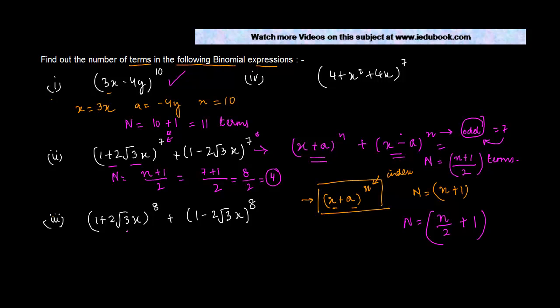Let's see the third question. The third one if you compare is again something similar, x plus a to the power n plus x minus a to the power n. So it's 1 plus 2 root 3x plus 1 minus 2 root 3x. The only difference between second and third is that the value of n here is even.